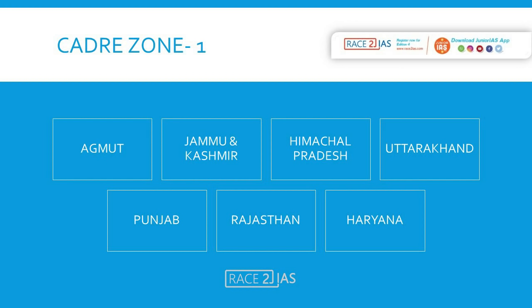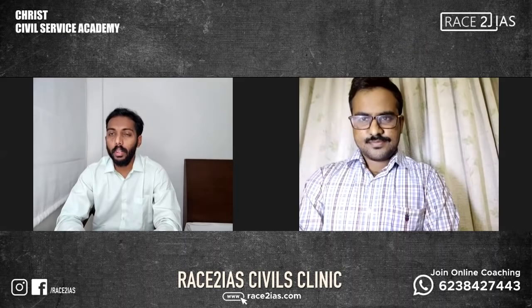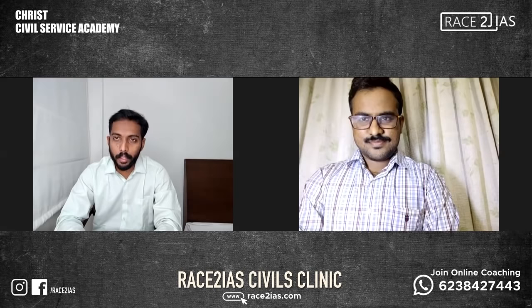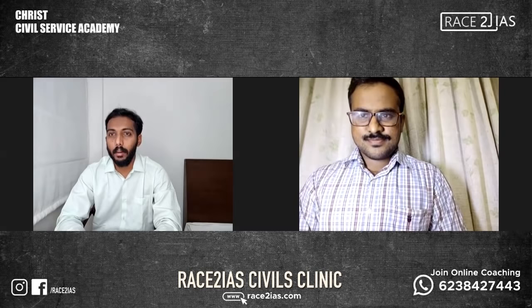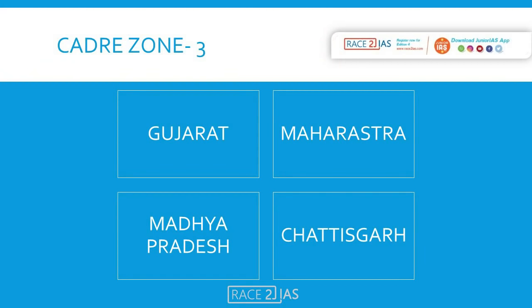Zone 2 includes Uttar Pradesh, Bihar, Jharkhand, and Odisha. Zone 3 includes Maharashtra, Madhya Pradesh, Chhattisgarh, and Gujarat.